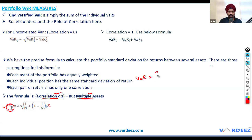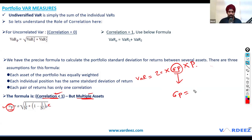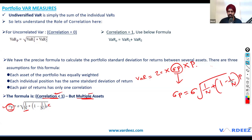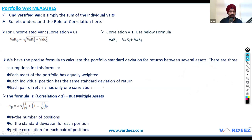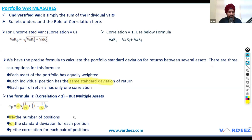N is the number of positions, sigma is the common standard deviation, and P is the common correlation for each pair. This formula applies for multiple assets when correlation is less than one. You calculate volatility this way, then plug it into the VAR formula: Z times standard deviation times the amount invested.